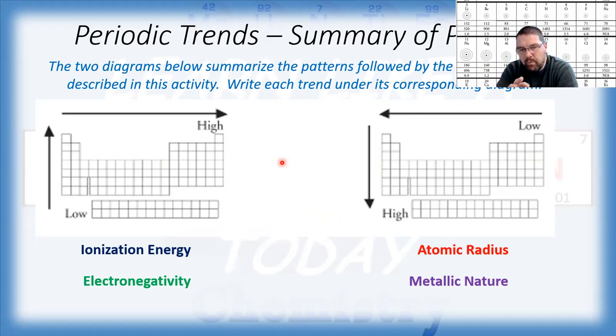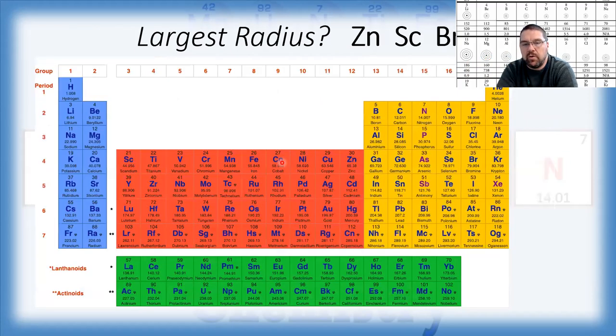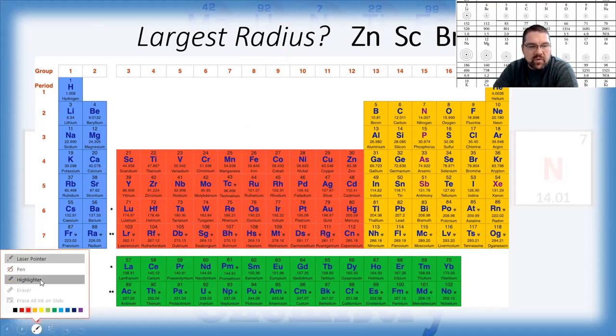So by remembering these two basic patterns, either your high values are going to be upper right corner or lower left corner, and which trend goes with which. When we get to questions like this, then we can say, I'm looking at the atomic radius trend. So that tells me that my highest values, I remember, are going to be in the lower left-hand corner.